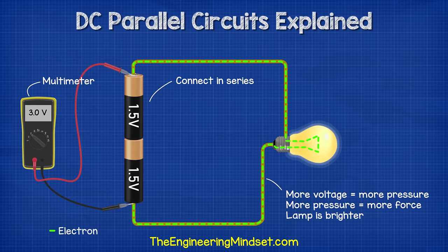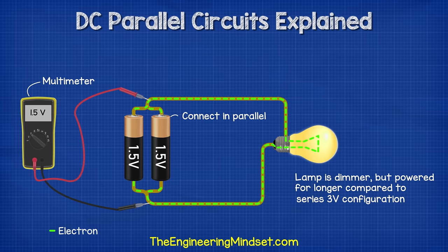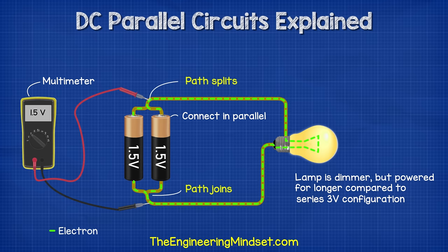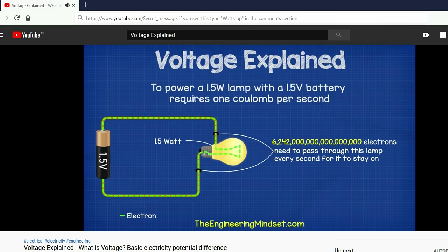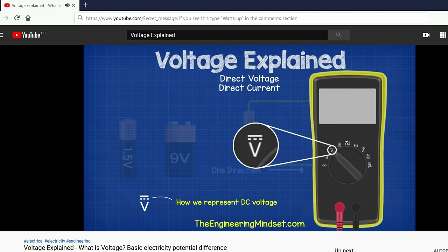If we connect two 1.5 volt batteries in series, the voltage increases to three volts. Why? Because the electrons are being boosted by the second battery, so they increase in pressure or voltage. However, when we connect batteries in parallel, the voltage doesn't increase — we only get 1.5 volts. Because the batteries can't boost each other in this configuration; the path of the electrons is joined and then splits, so the flow of electrons is shared between the batteries. The batteries therefore can't provide more voltage. However, their storage capacity has increased, so they can provide 1.5 volts for longer than a single battery by itself. We've covered the basics of voltage in detail in our previous videos — do check that out, links down below.